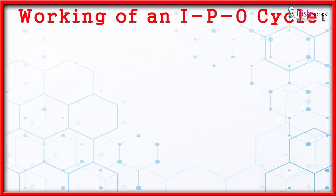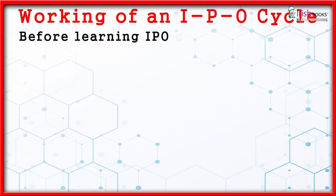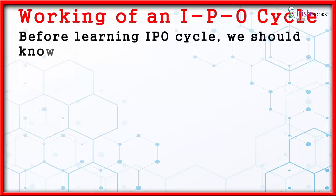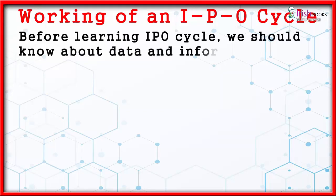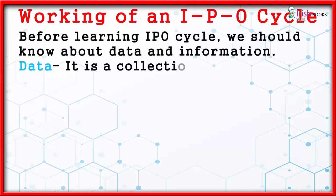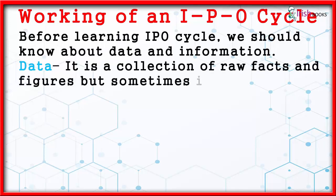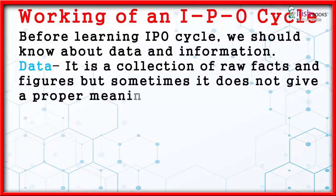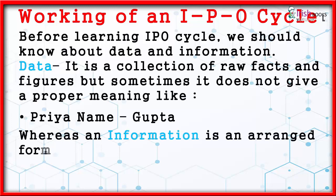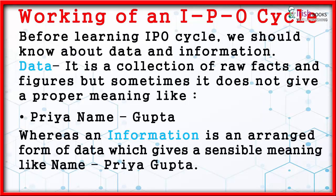Working Off an IPO Cycle. Before learning the IPO cycle, we should know about data and information. Data is a collection of raw facts and figures, but it does not always give a proper meaning, like 'Priya name Gupta.' Information is an arranged form of data which gives a sensible meaning, like 'Name: Priya Gupta.'